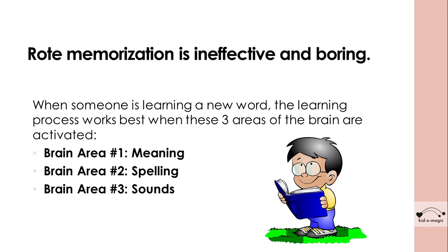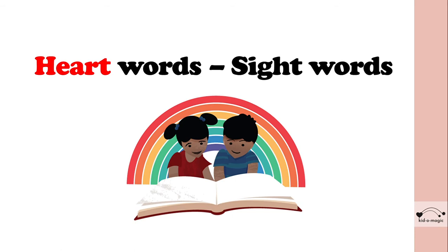Those three areas are: meaning, spelling, and sounds. Did you know that our brain stores 30,000 to 70,000 words? So it really becomes easy when we use other strategies.